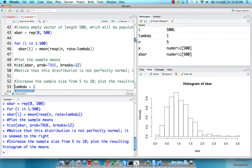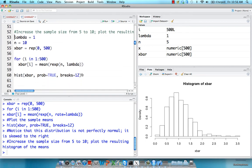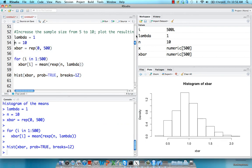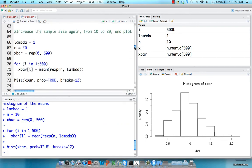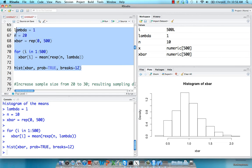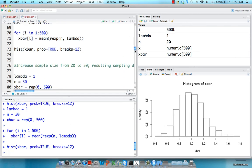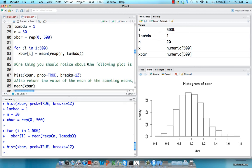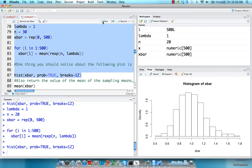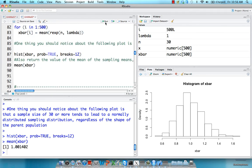So if we increase the sample size from 5 to 10, the skew reduces, and it becomes more normal in shape. Do this again, increase to 20, it becomes more normal, and lastly with 30, it becomes even more normal. And the mean of these sampling distributions is again very close to the population mean.